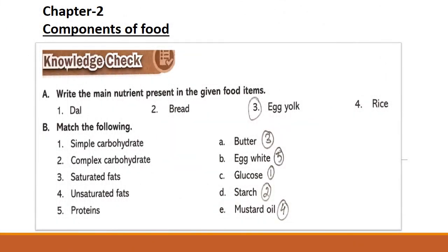In the last video I gave you a knowledge check. Now let's see those answers. Write the main nutrient present in the given four items: dal, bread, egg yolk and rice. Among these four, which one has the most nutrient? It is the egg yolk.